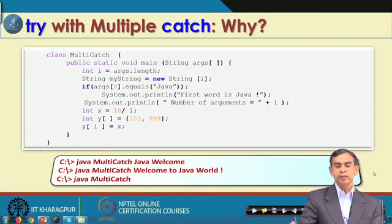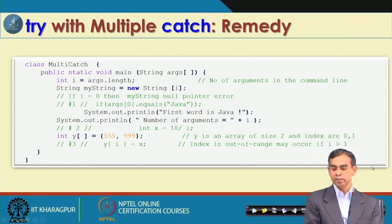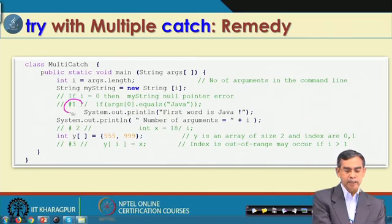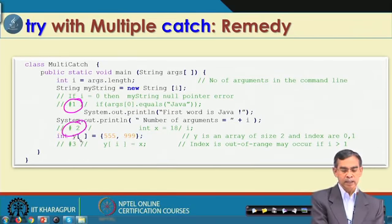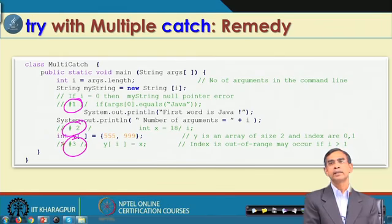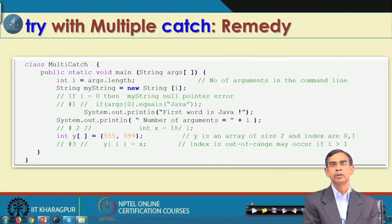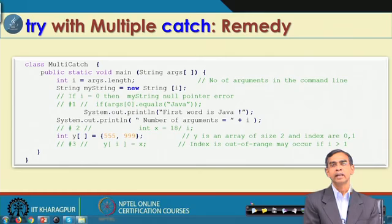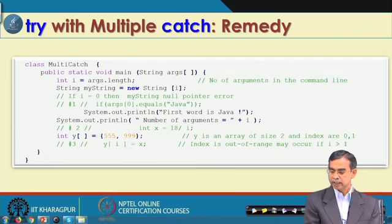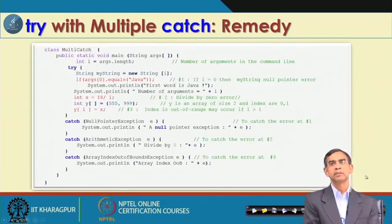As a result, this program is not robust. There are three points where errors occur — multiple exceptions for different inputs. The solution is to include all statements where exceptions may occur inside the try block, and plan a catch block for each exception. Here is the program rewritten using try with multiple catch.